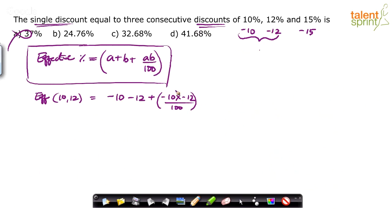Plus 120 by 100 is how much? Plus 1.2. So minus 22 plus 1.2. How much is that? Basically, 22 minus 1.2. So this comes out to be 20.8%. Minus 20.8%.